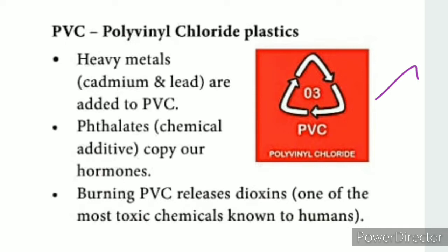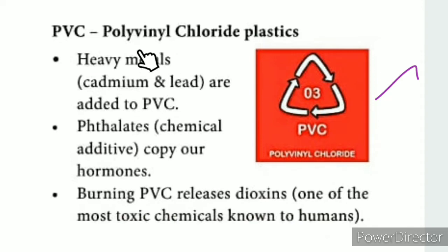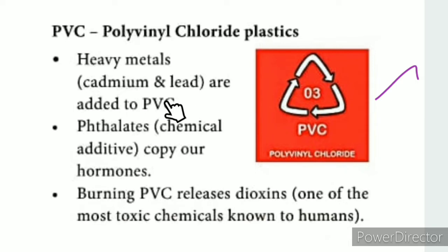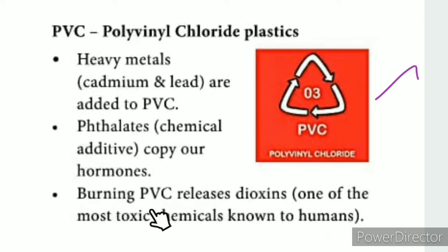Resin code 3 is PVC. Various chemicals, including lead, are added to PVC. Dioxin is one of the most toxic chemicals known to humans, and it is released when PVC is burned.